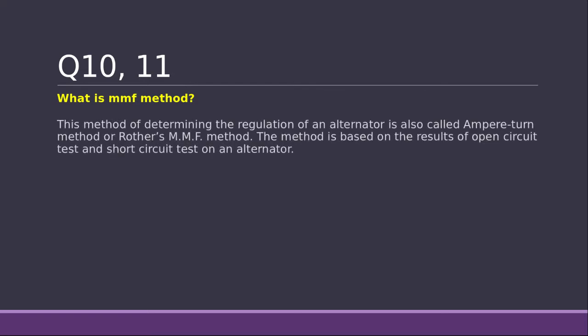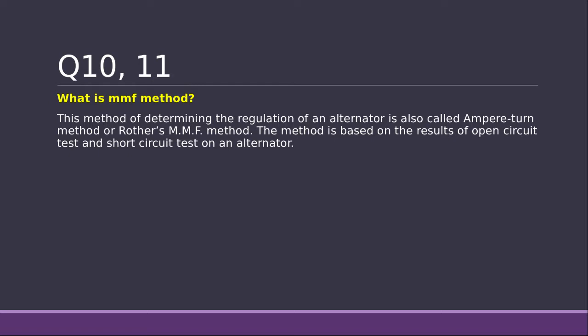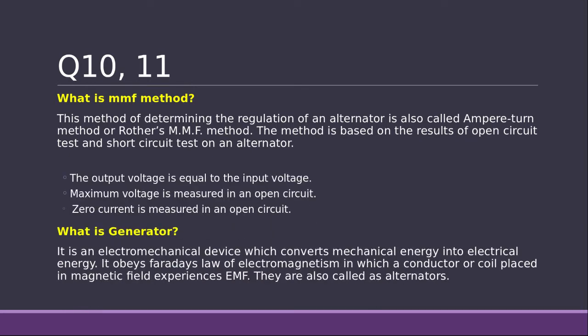What is MMF method? The method of determining the regulation of an alternator is called as ampere turn method or Rother's MMF method. So we are going to determine just the regulation of an alternator. That's it. This method is based on the results of open circuit test and short circuit test of an alternator. Remember this, all these are very important.